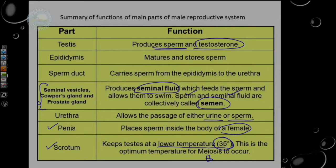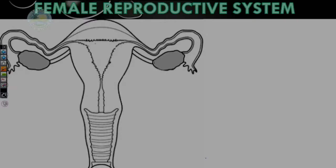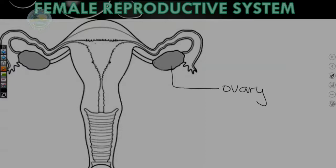Let us move on to the female reproductive system. The female system is much simpler to draw, but in terms of the functions of the various parts, it is a little more complicated. We will start with the egg-shaped structure called the ovary. The ovary contains all the eggs or ova that a female will need throughout her lifetime. She is already born with all the immature follicles she would need. When an egg is released, it is released into a tube on either side called the fallopian tube.